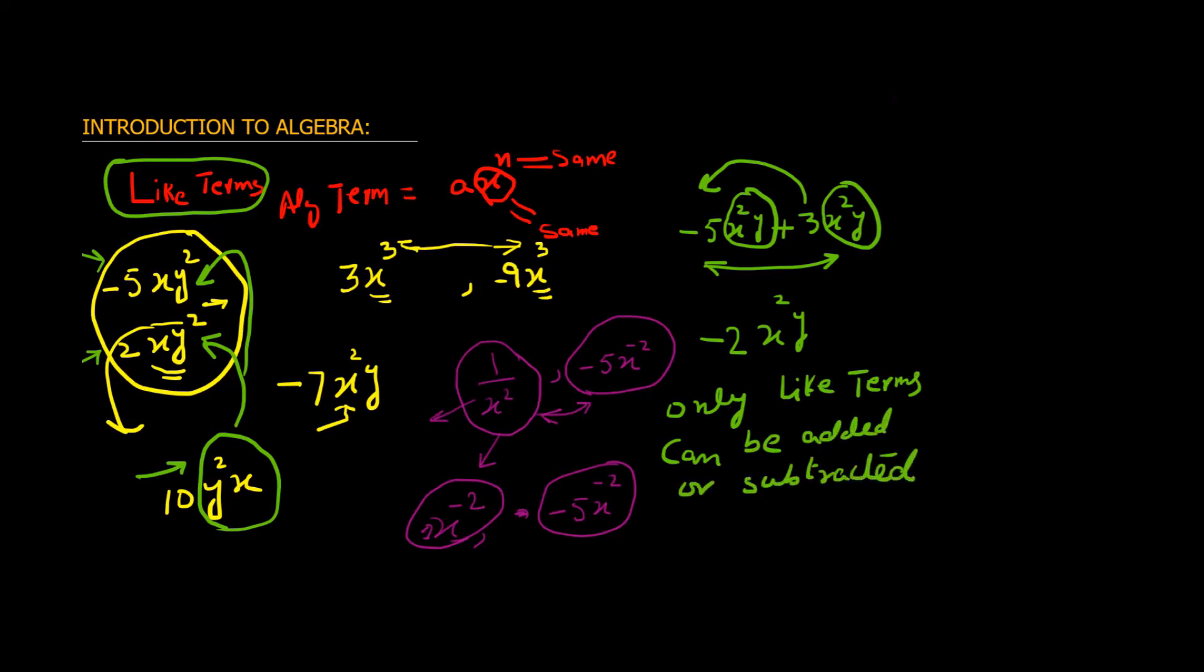We cannot add or subtract unlike terms. So for example, we have two terms: minus x square plus x cube. Both of these terms have same base, but the exponent is different. So these terms, although being added, will stay like this. They cannot be further simplified.